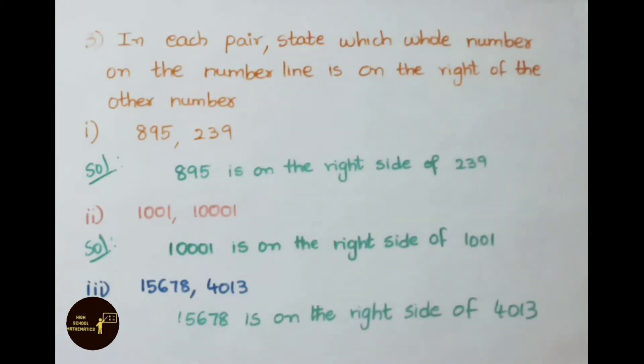See now third question. In each pair, state which whole number on the number line is on the right side of the other number. If we observe on the number line, left side onwards towards right, lower to higher numbers will be there. That means larger number will be on the right side.